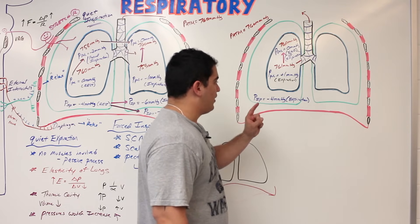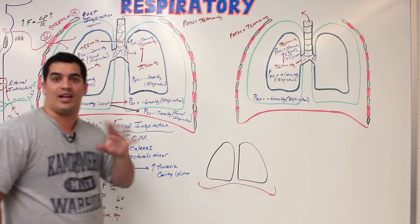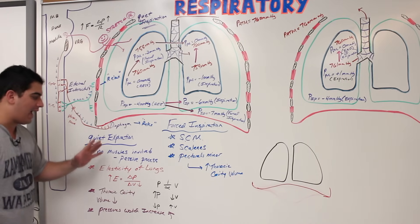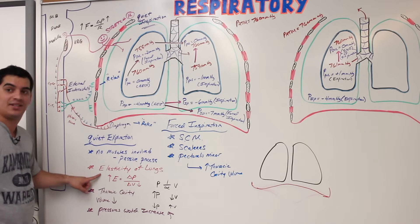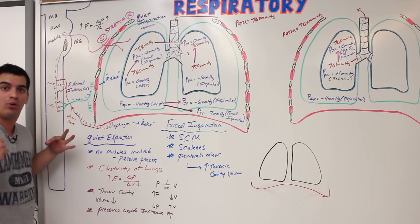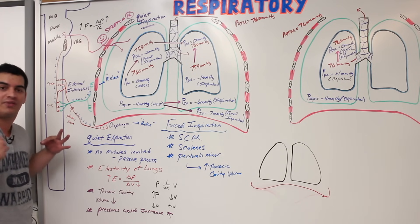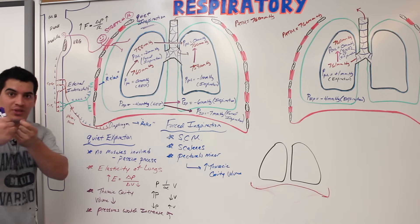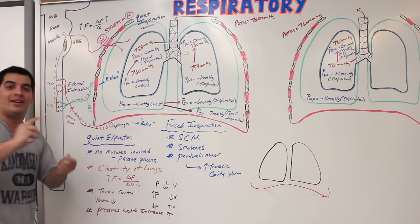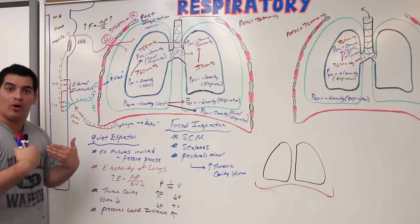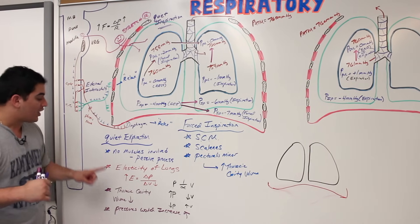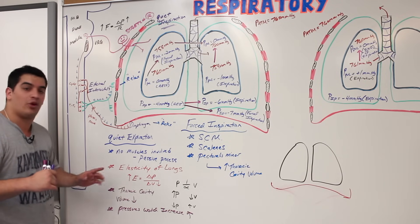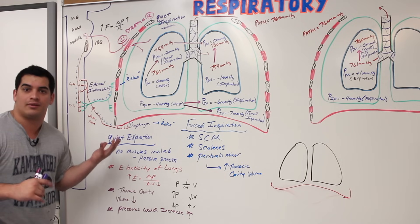To review quiet expiration: no muscles are involved — it's passive. It depends on the natural elasticity of the lungs wanting to recoil, which pulls the visceral pleura away from the parietal pleura. Since those layers are sticky, it pulls the parietal pleura too. The chest wall recoils as the external intercostals and diaphragm relax, decreasing thoracic cavity volume and increasing all pressures.